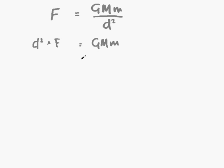We want the subject of the formula to be d. So what we need to do is move the F. That would leave d squared on the left-hand side. We have GMm on the right-hand side still. F was multiplying d squared on the left. So when we move it to the right, it will divide. So we have d squared equals GMm divided by F.